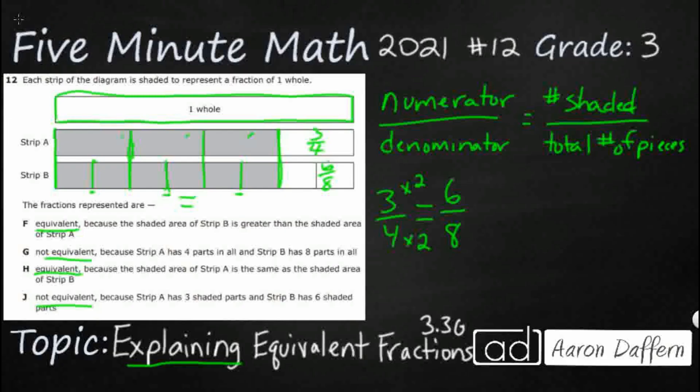So why is that true? We know G is incorrect. We know J is incorrect. F says, because the shaded area of strip B is greater than the shaded area of strip A. Well, two problems here. First off, they're not, it's not greater. Strip B is not greater. And second problem, if it was greater, that would mean it's not equivalent. That means it's greater than. So F does not work.